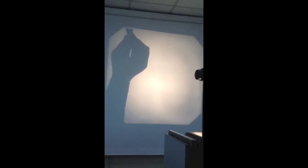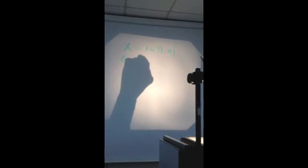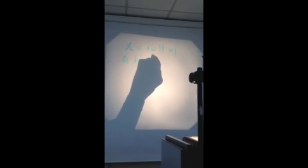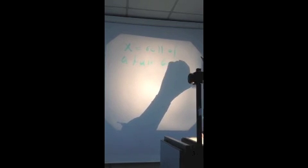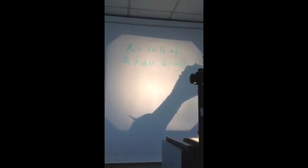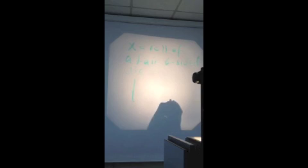I will continue with another example for discrete uniform distribution, or we can call it the probability mass function. If X is the result of a roll of a fair six-sided die, which is any regular type of die, how is the shape going to be?